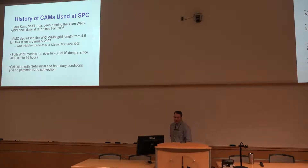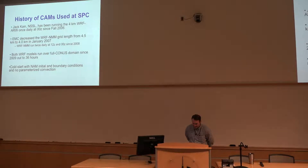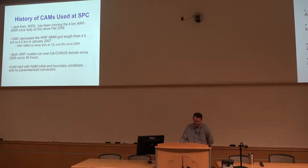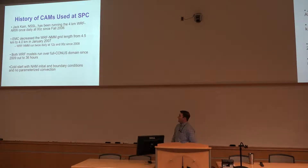Some of the history of CAMs: we started running these in real time at NSSL in 2006, then EMC jumped in in 2007, so we have a decade of use of CAMs in real time basically to help with convective outlooks and forecasts. Those early ones used NAM initial conditions and boundary conditions, no convective parameterization, they're cold start, no radar data assimilation.